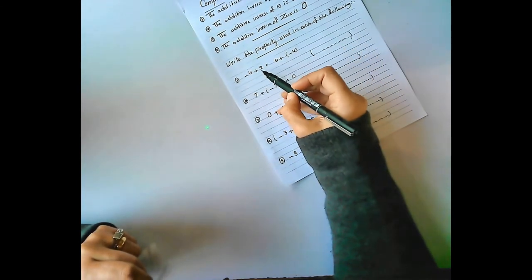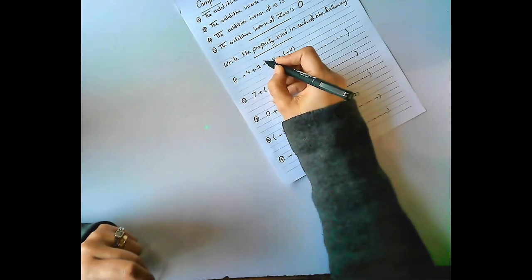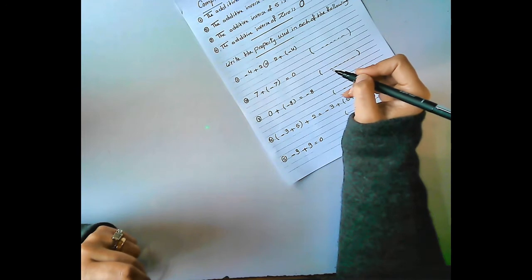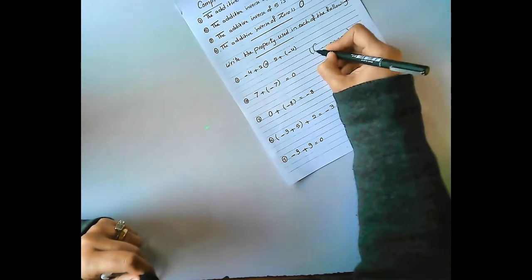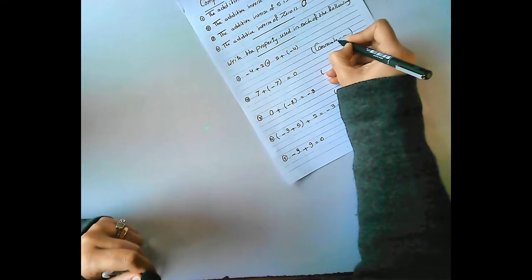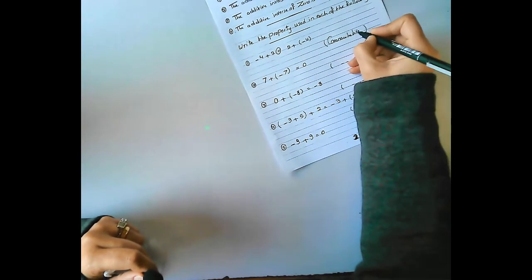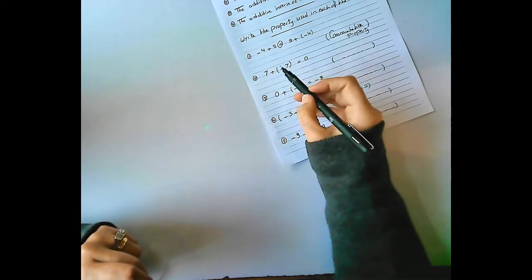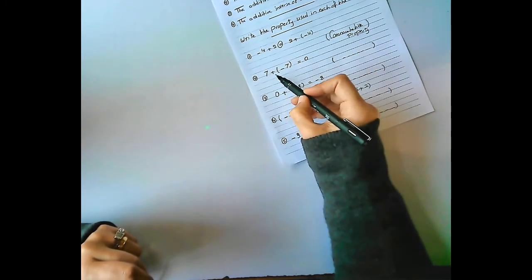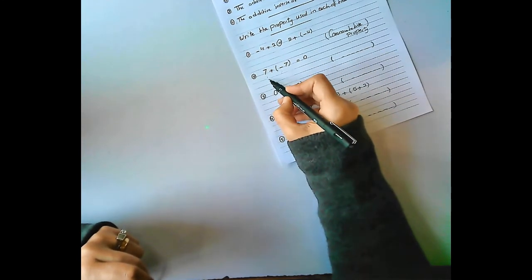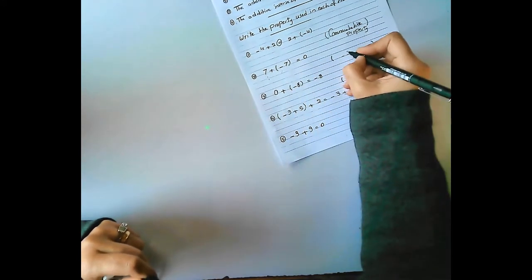Write the property used in each of the following. Number 1: negative 4 plus 2 equals 2 plus negative 4 — that is the commutative property. Number 2: 7 plus negative 7 equals 0 — that is the additive inverse.